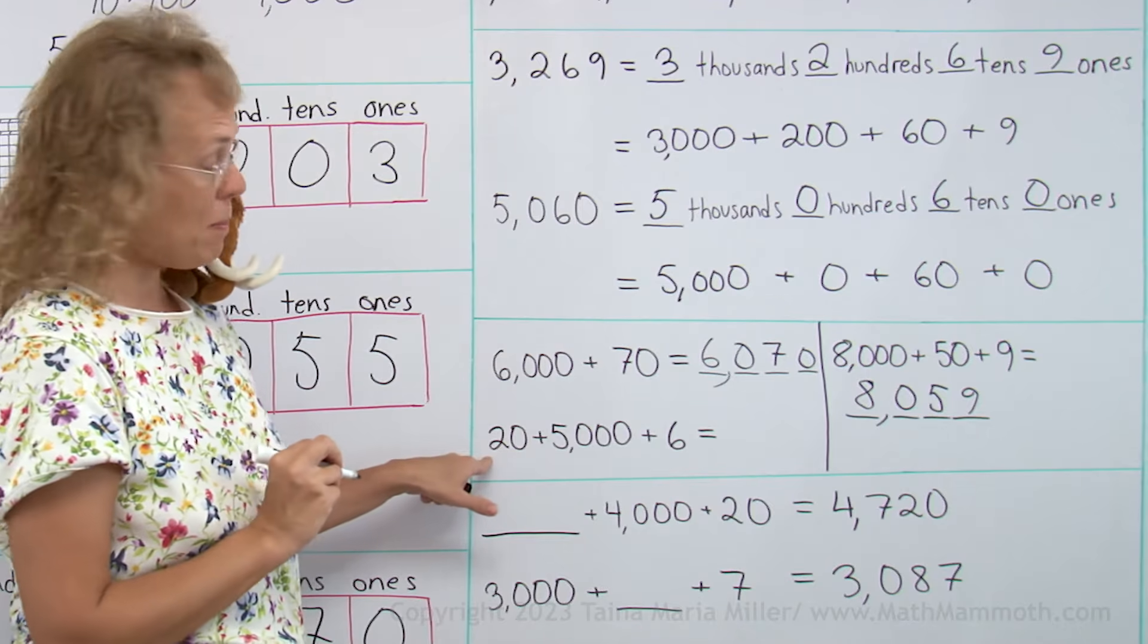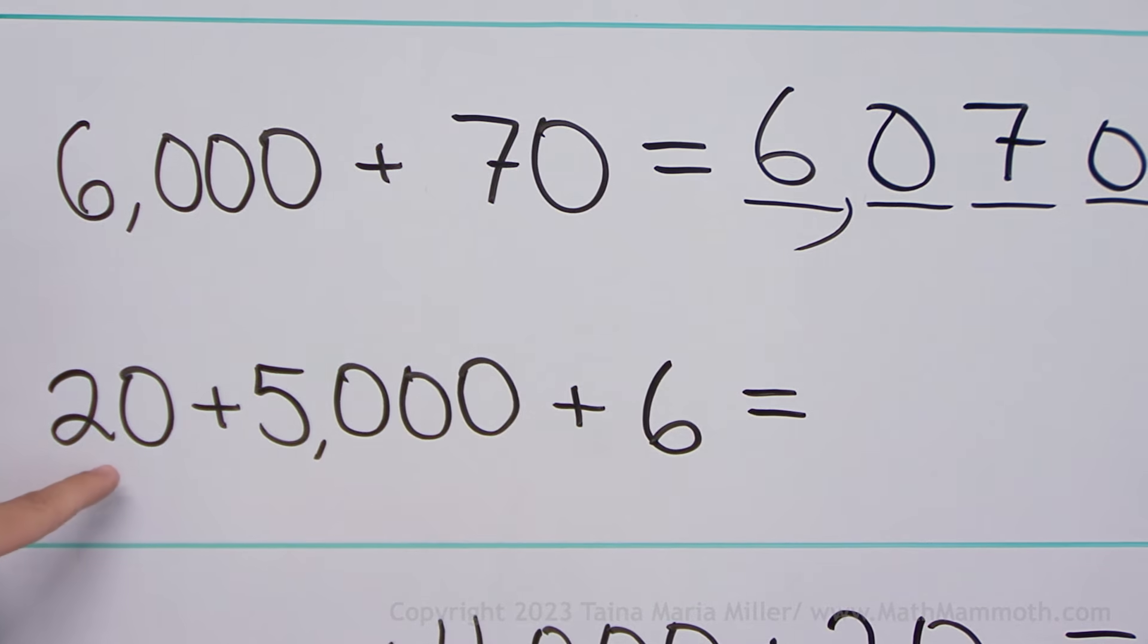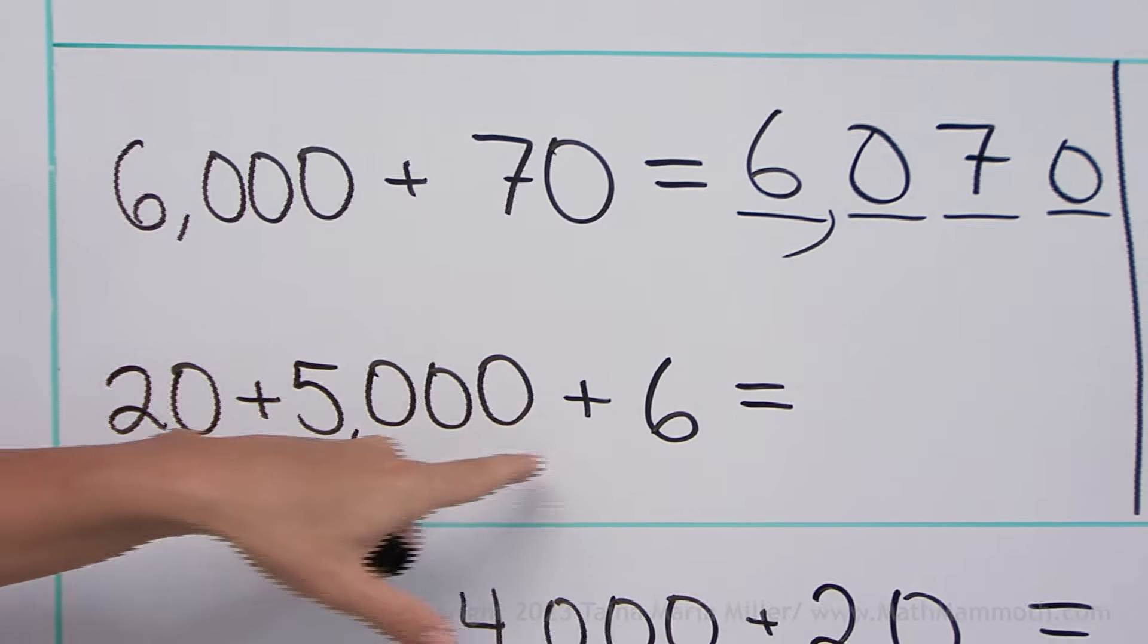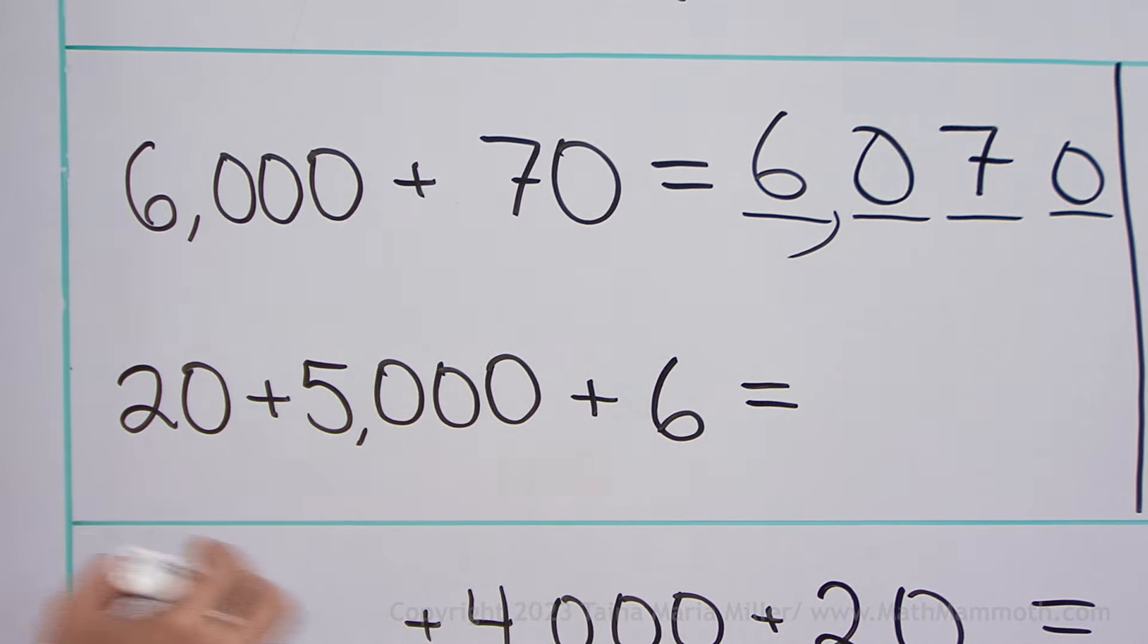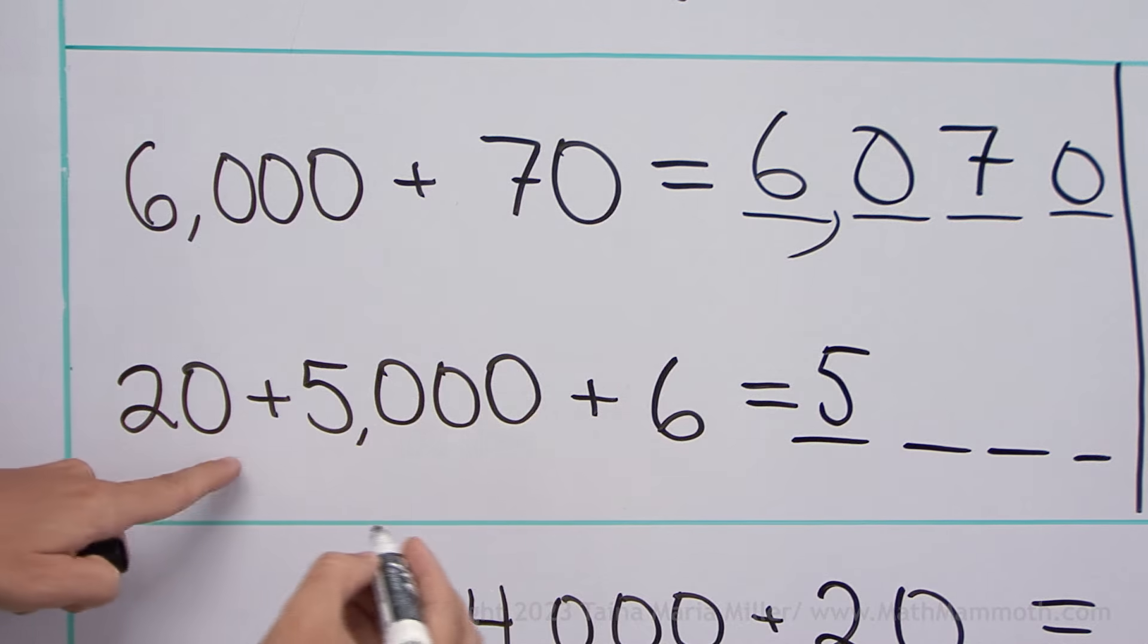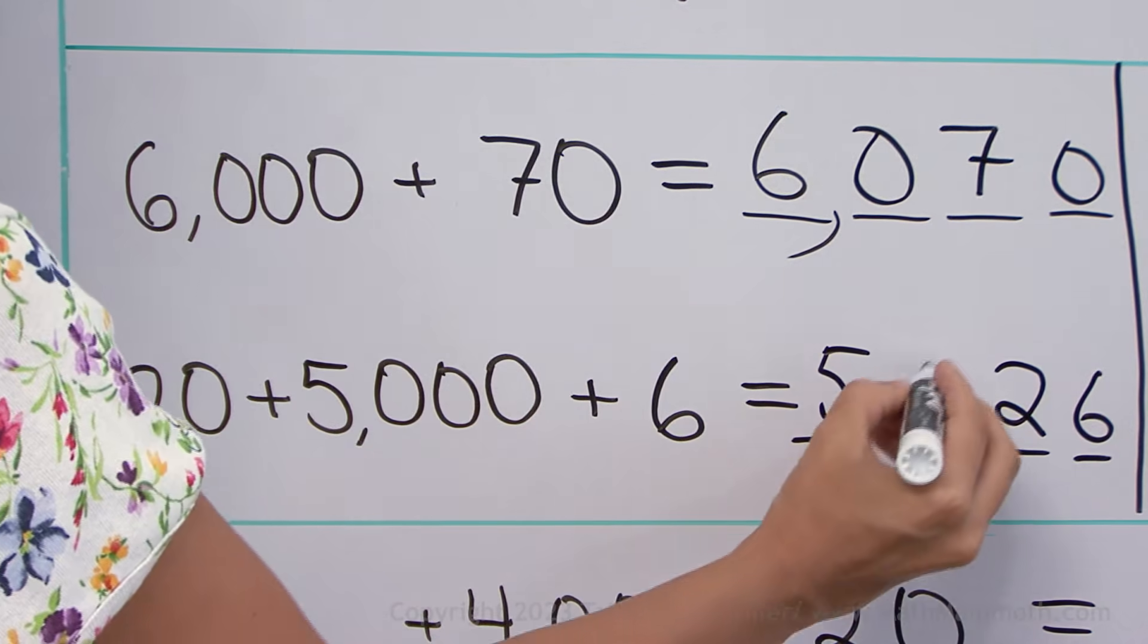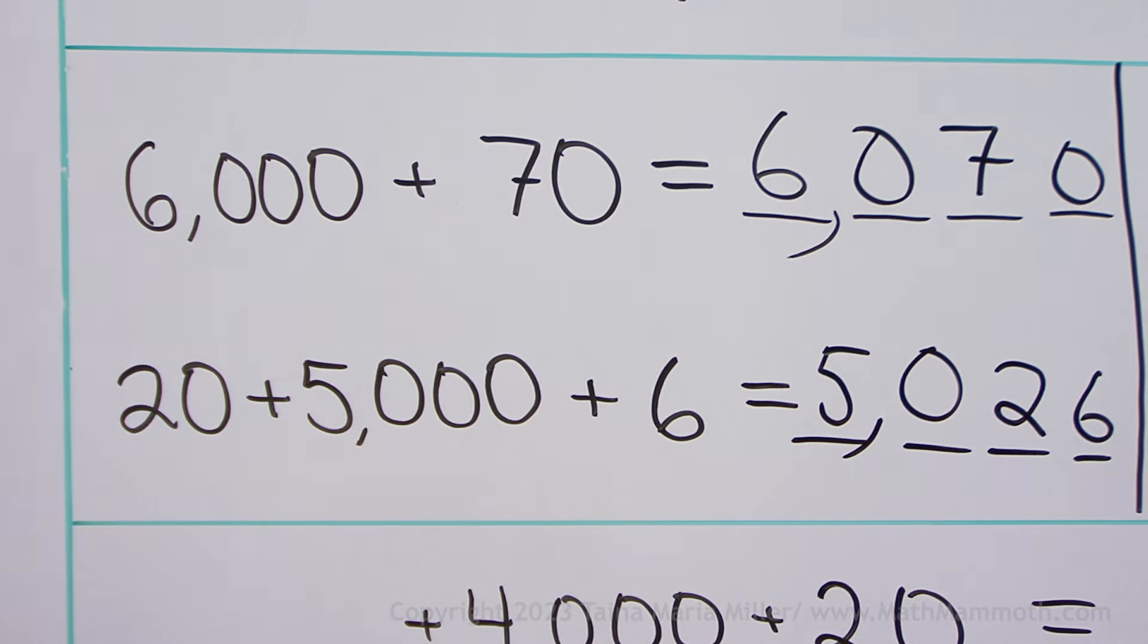How about this one? Now those parts are in scrambled order. Twenty plus five thousand plus six. Okay. Five thousand, right? And twenty and six. And then the zero for the missing hundreds.